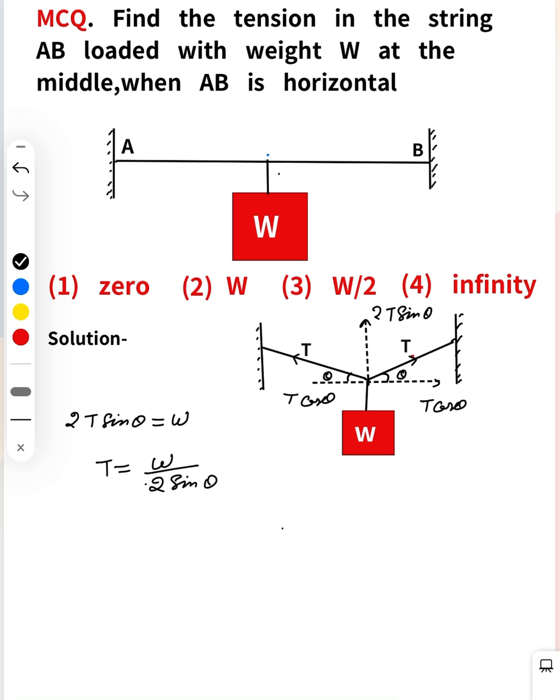According to the question, when AB is horizontal, that means theta equals zero degrees. If theta equals zero, then sin theta equals zero.